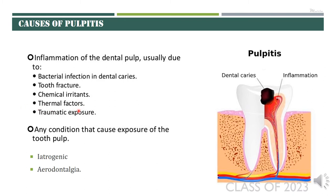Pulpitis can also occur because of exposure to extreme temperature variation. These thermal factors can also be produced during cavity preparation, and lack of irrigation will result in thermal changes causing damage to the pulp and inflammatory changes. Traumatic exposure can occur iatrogenically and may result in a form of pulpitis we call reversible pulpitis. Another form of transient pulpitis is aerodontalgia, also known as barodontalgia, caused by changes in atmospheric pressure — generally seen in deep sea diving and air travel at higher altitudes. It results in compression of blood vessels in the pulp causing transient inflammatory changes and pain.